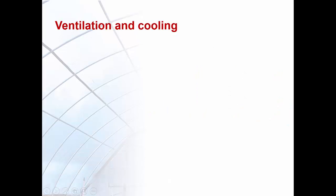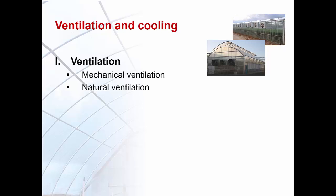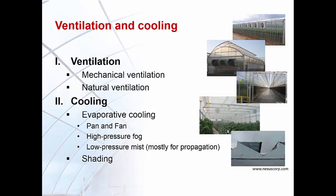Typical methods to prevent excessive temperature rises in greenhouse systems are ventilation and cooling. Ventilation can be achieved using mechanical ventilation with fans or by natural ventilation using roof and side vents. Common cooling methods include evaporative cooling systems such as pad and fan, high pressure fogging systems, and low pressure misting systems, as well as shading with internal and external shade curtains.